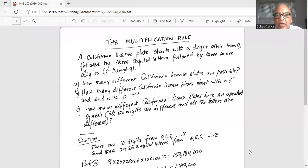The multiplication rule. A California license plate starts with a digit other than zero followed by three capital letters followed by more digits zero through nine. How many different California license plates are possible?